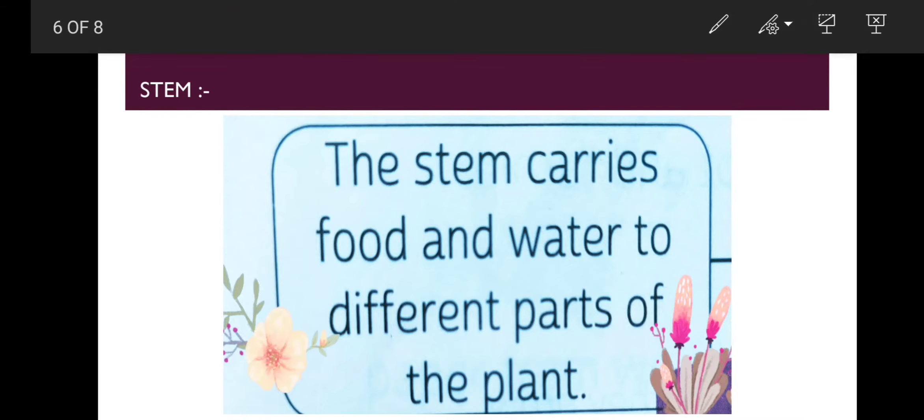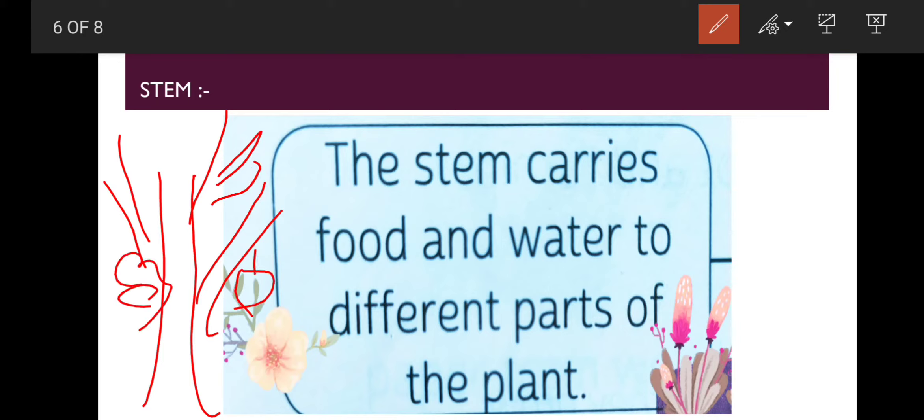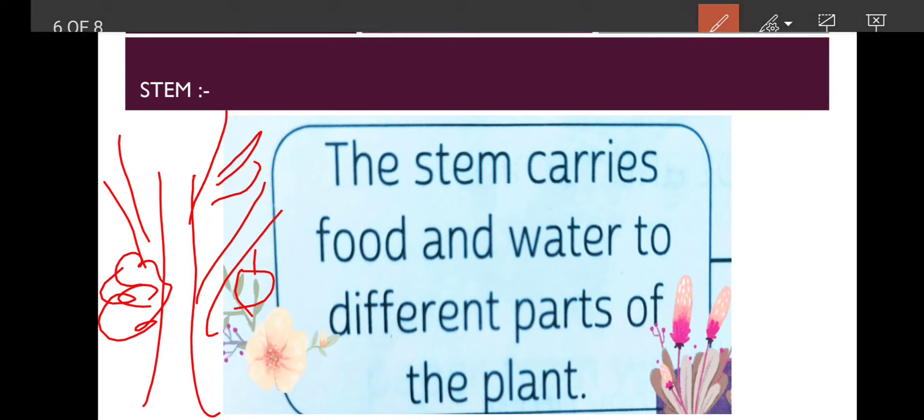It is in the main place, branches come from it. Branches have leaves, fruits, and flowers on them. So you can understand that the stem carries food and water to different parts of the plant. So this is your stem's function.